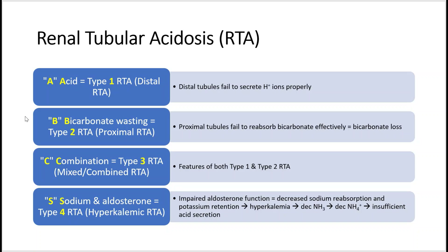RTA stands for renal tubular acidosis, and here we have ABCs 1, 2, 3, and 4. A stands for acid, and that's type 1 RTA. That's when the distal tubules fail to secrete the H+ ions properly, resulting in your body holding on to more of the H+ ions that's acidic, so you have metabolic acidosis.